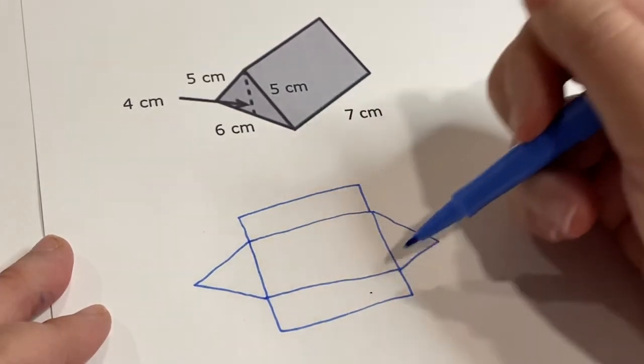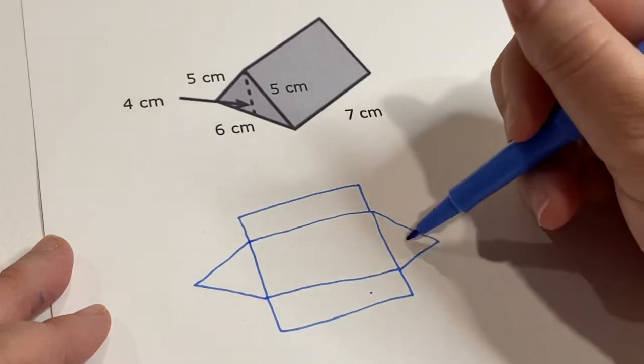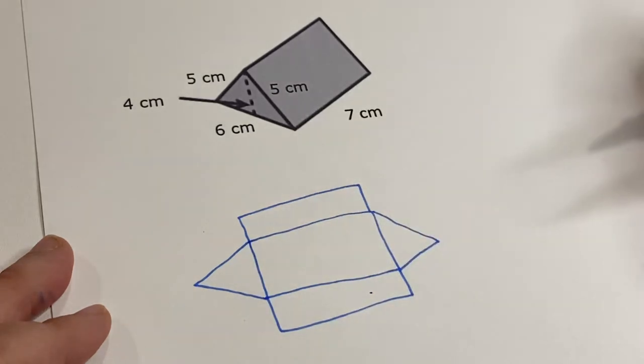So this will be the same area as this, these two rectangles, and these two triangles will have the same area as each other.